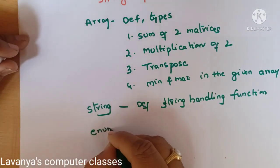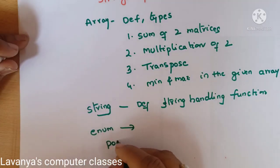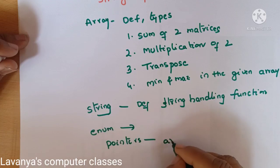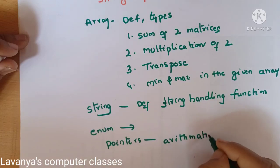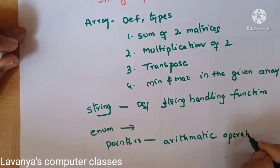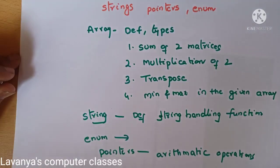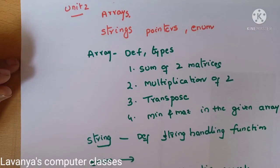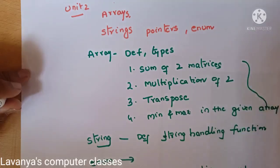Enum is a compulsory theory question. Then pointers — what is a pointer and what are the arithmetic operations performed on a pointer. These are the Unit 2 important questions, everything explained with programs.